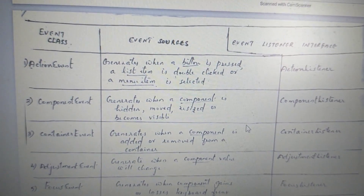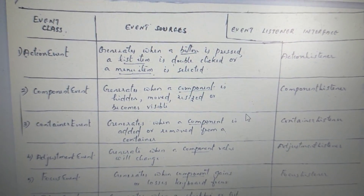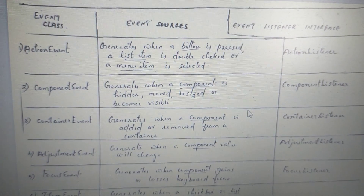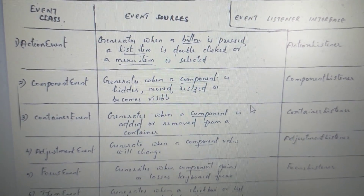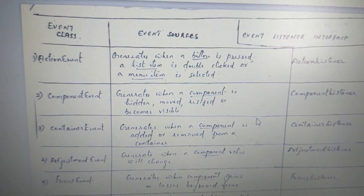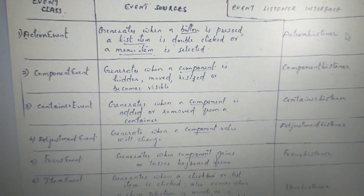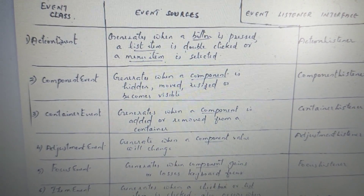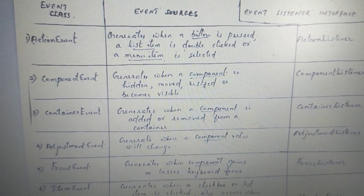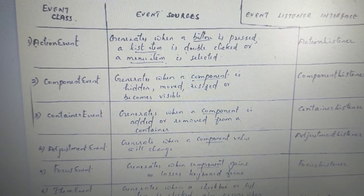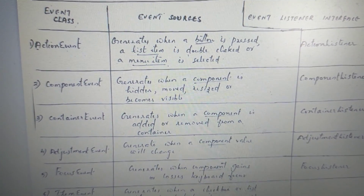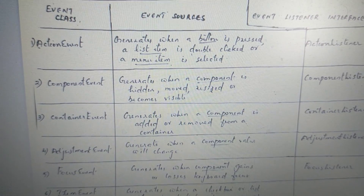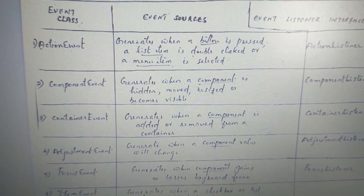In the table, the event class and event source are shown. The action event is handled by the action listener. If you press a button, double-click a button, or select a menu item, you will generate an action event.